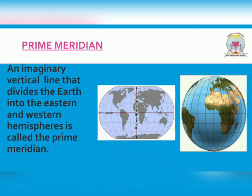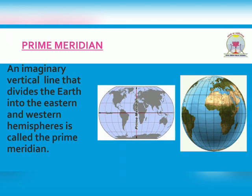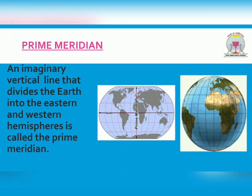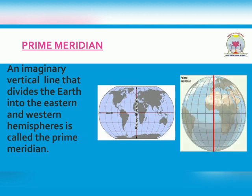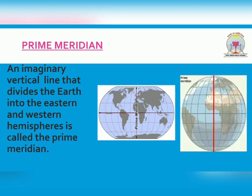Our next point is: What is a Prime Meridian? Another imaginary vertical line divides the Earth into the eastern and western hemispheres. This line is called the Prime Meridian. It runs from the North Pole to the South Pole.